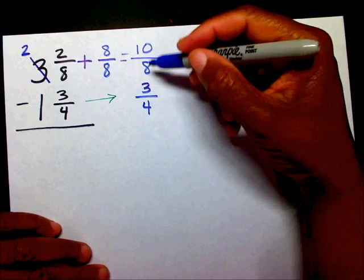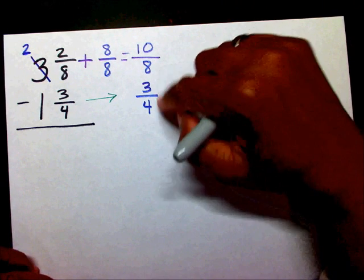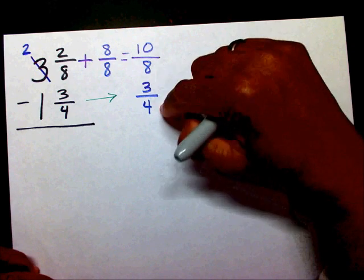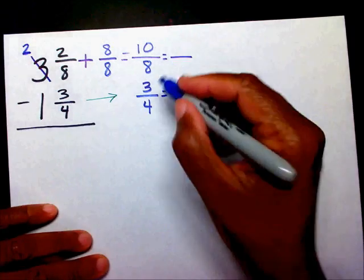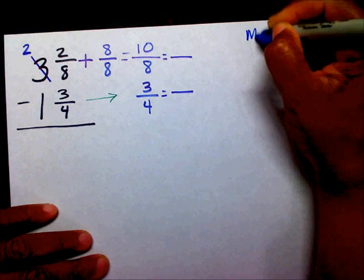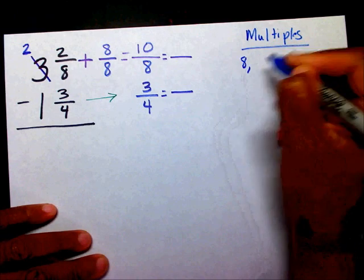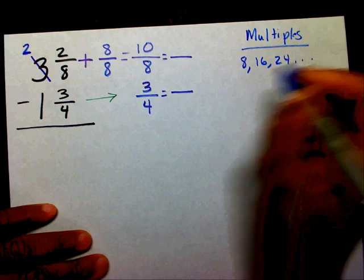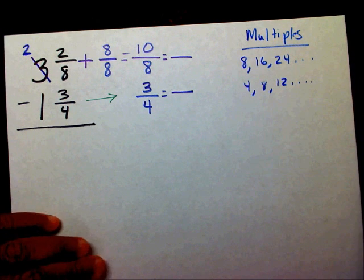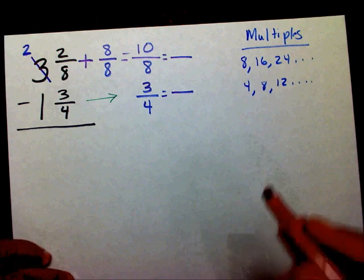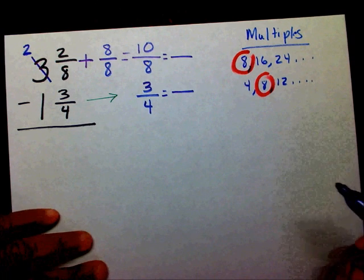Now I'm going to see if I can add my fractions. I have a denominator of eight and a denominator of four — I can't subtract these two fractions because I need a common denominator. So I'm going to get a common denominator. Let's list our multiples of eight: eight, sixteen, twenty-four, and so on. And multiples of four: four, eight, twelve, and so forth. They have the number eight in common, so eight is going to be my new denominator.